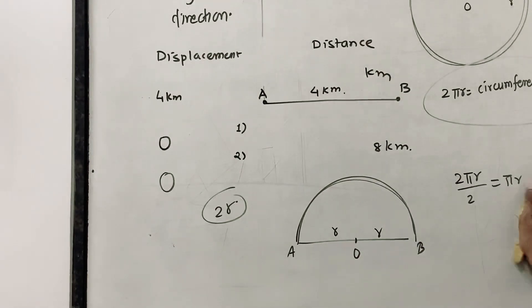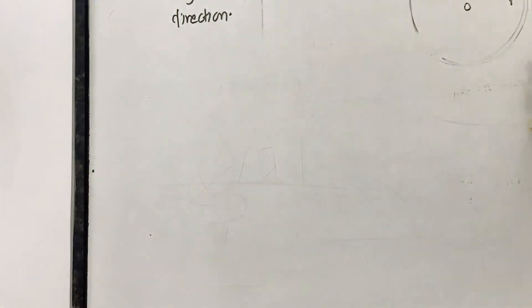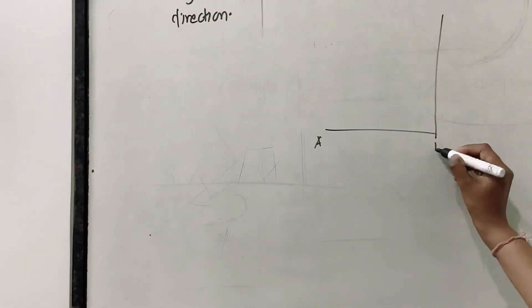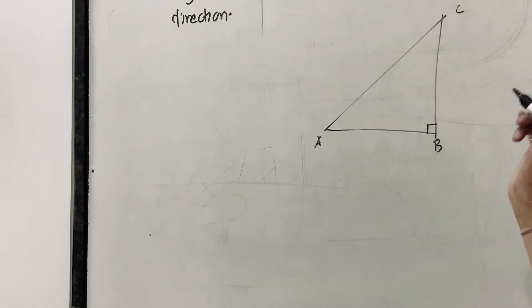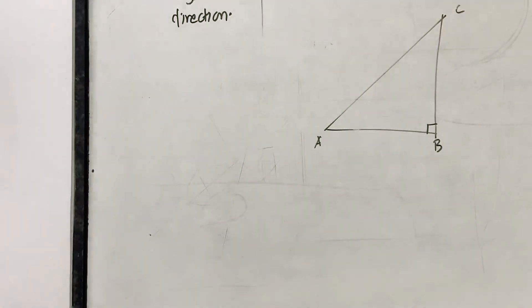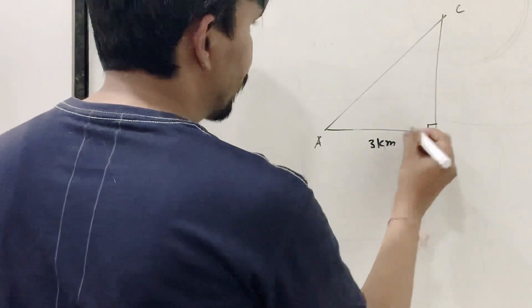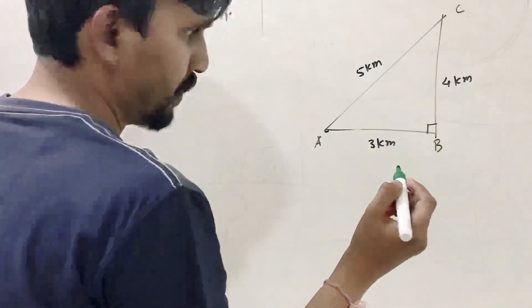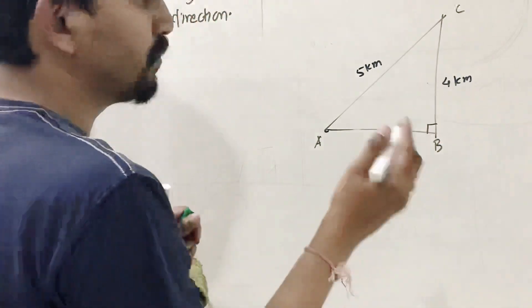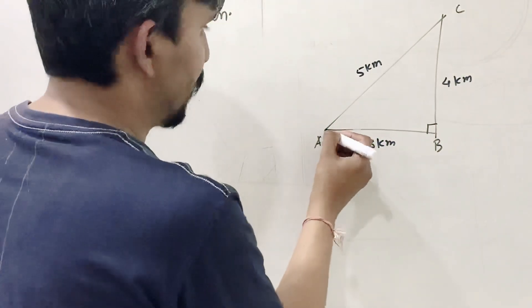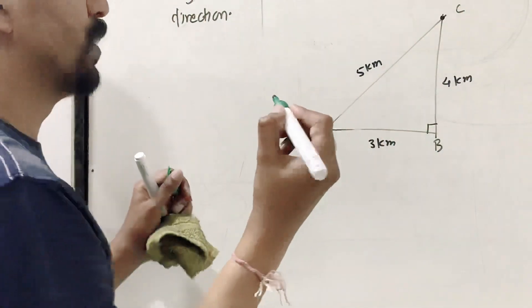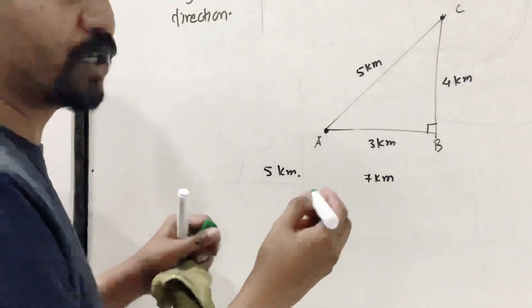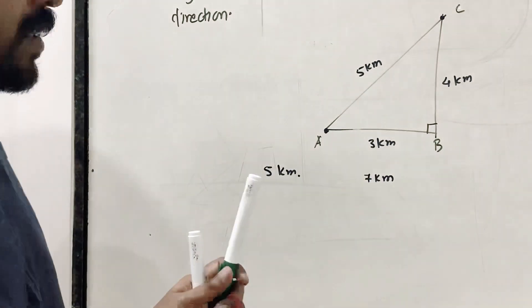Now an example using the Pythagoras theorem. There are three points A, B, and C at 90 degrees. The distance AB is 3 km and BC is 4 km, making AC equal to 5 km. A person starts from A, travels 3 km to B, then turns 90 degrees and travels 4 km to C. The total distance covered is 7 km, but the displacement is 5 km — the shortest distance from starting point A to end point C.